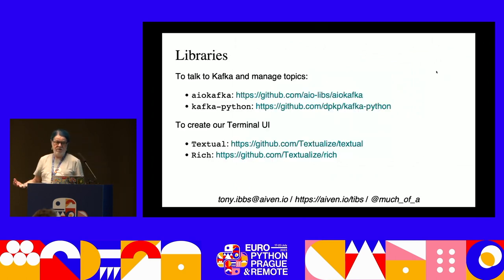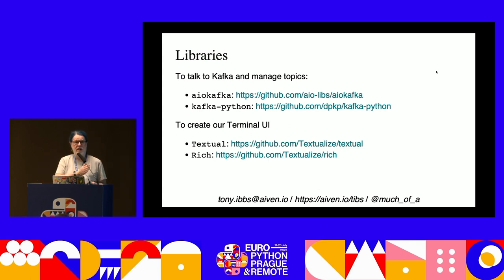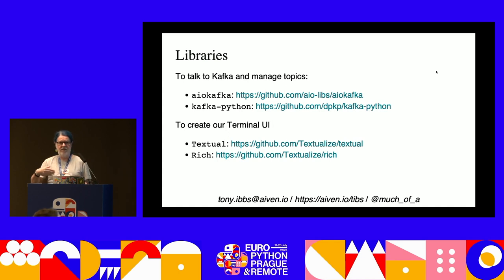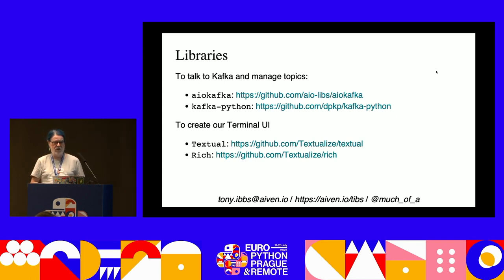The libraries we're using: I'm using AIOKafka, a lovely asynchronous Python library to talk to Kafka. To set up the topics I'm using Kafka-Python, which is an older non-asynchronous Python library that isn't particularly maintained but still works - though as Kafka moves on it will lag behind. To create the terminal UI I'm using a lovely package called Textual, which is based on Rich - go investigate those separately, they're wonderful. It's a lot easier than spinning up a web service for demos.